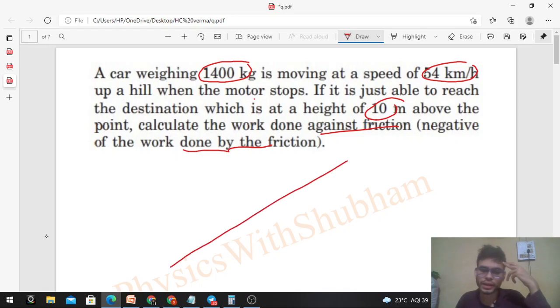So this is your car which was initially moving with a speed of 54 kilometers per hour. You can convert it to meters per second - multiply by 5 by 18 - so that's 15 meters per second. The initial speed is 15 meters per second.